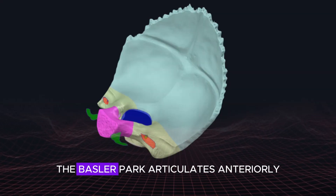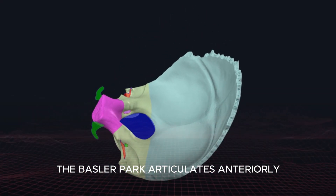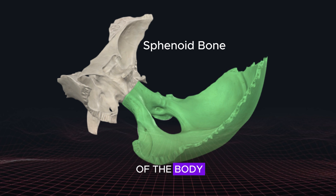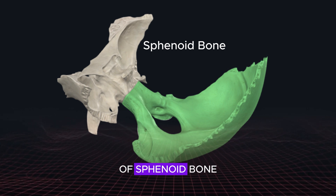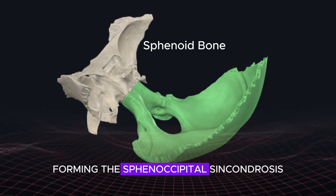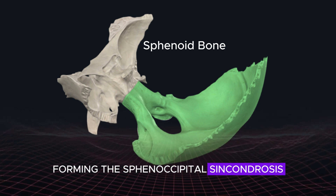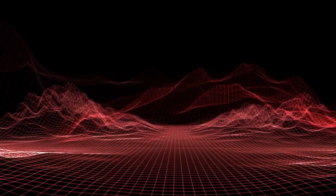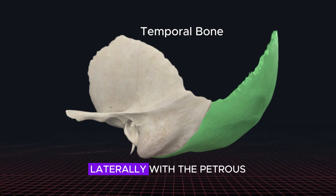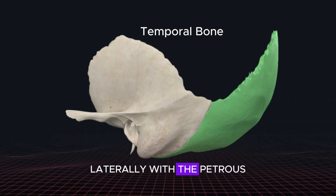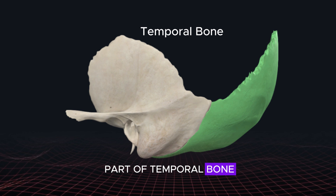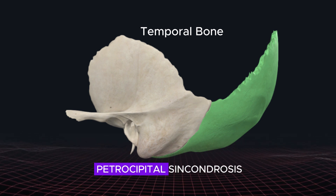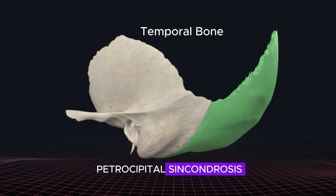The basilar part articulates anteriorly with the posterior surface of the body of the sphenoid bone, forming the sphenooccipital synchondrosis, and laterally with the petrous part of the temporal bone, contributing to the formation of the petro-occipital synchondrosis.